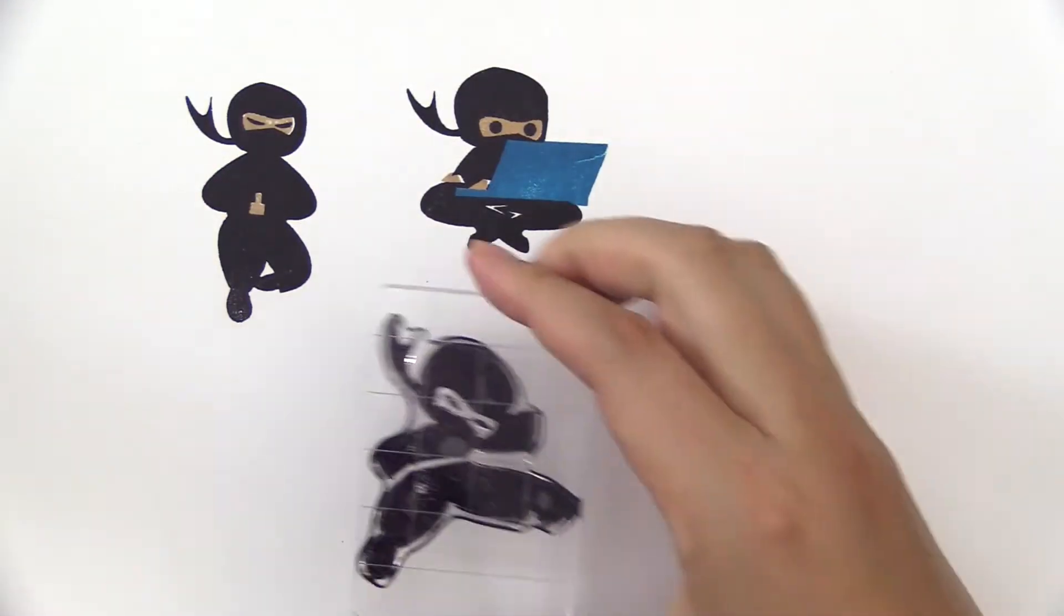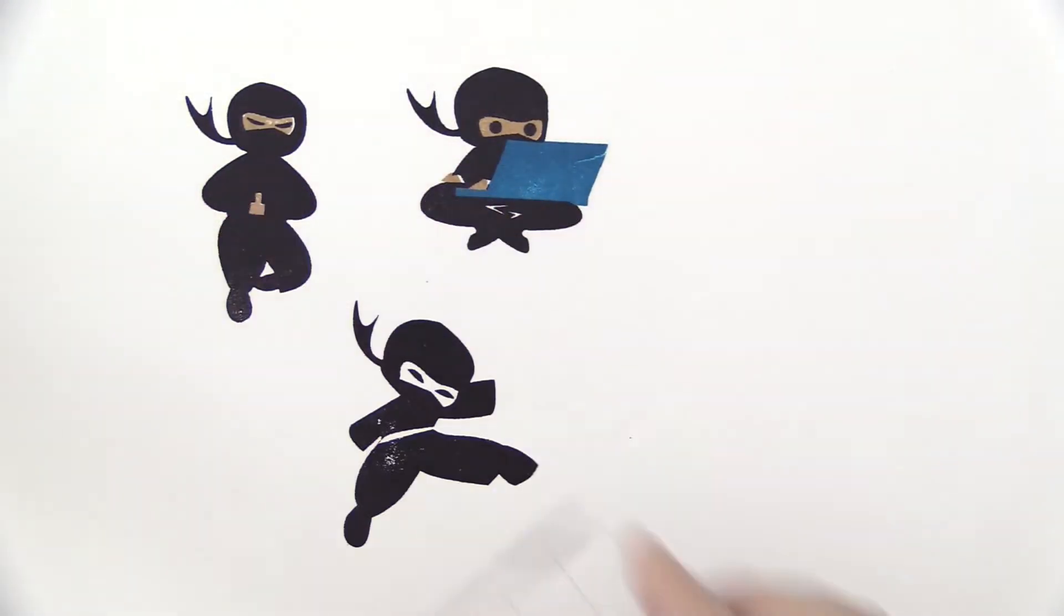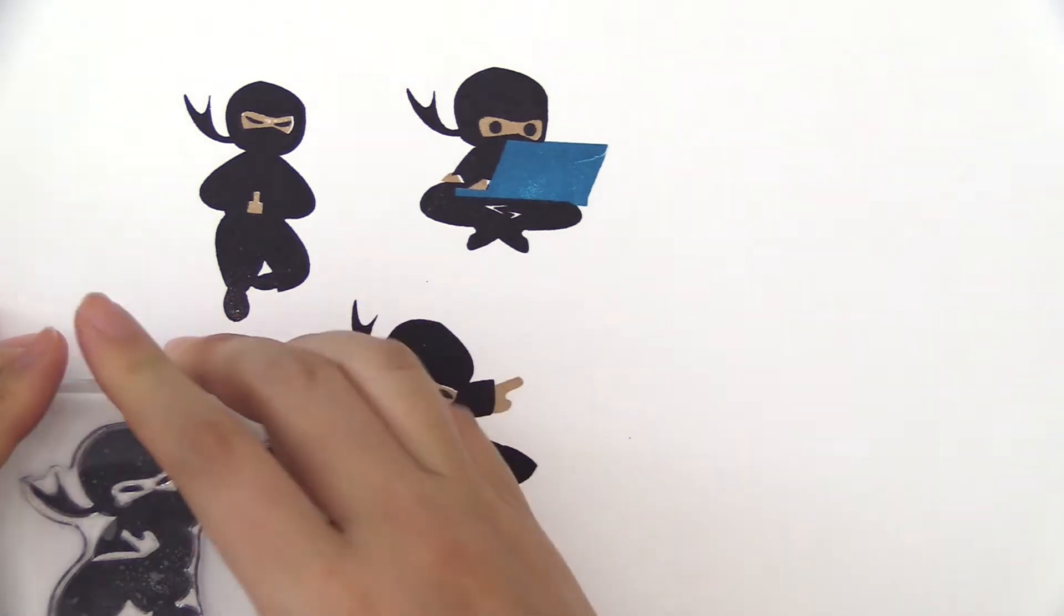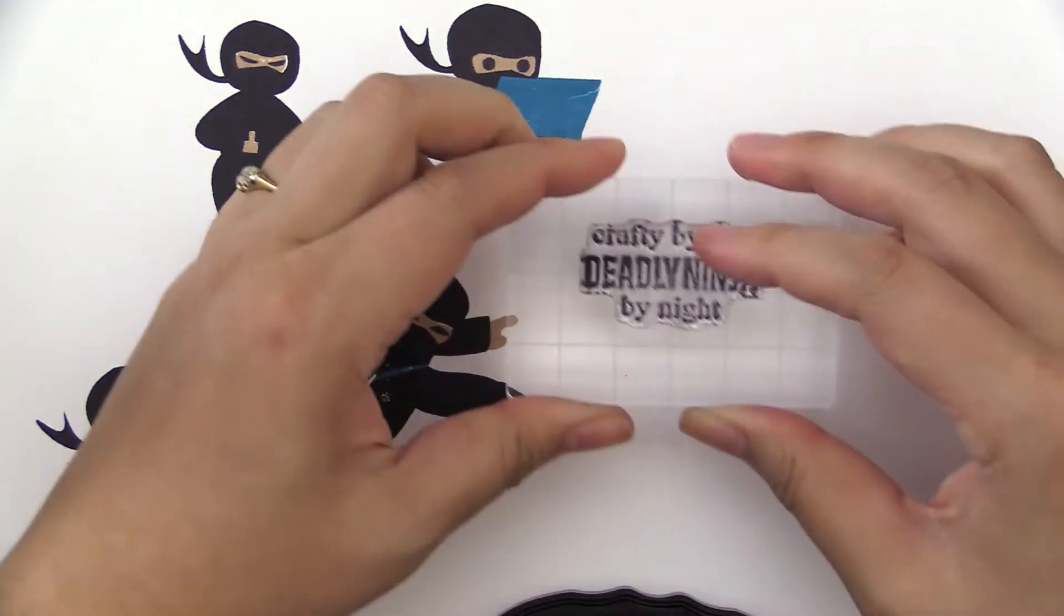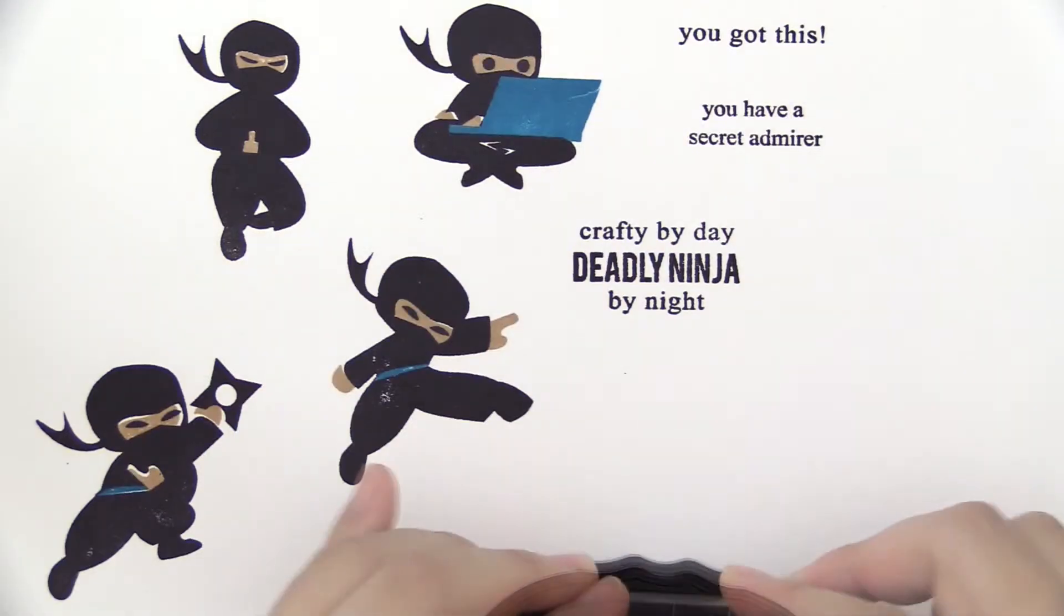This set has 6 ninja images, each with 2 or 3 additional images to fill in the face, hands, belt, or weapons. There are also 4 fun sentiments to go along with those ninja images.